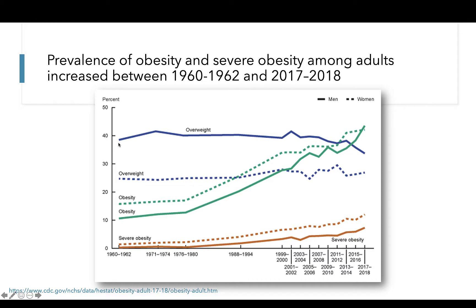Let's first look at trends for overweight. The prevalence of overweight is higher for men relative to women, but is actually fairly steady over time if we look at trends between the 1960s to the present day. In fact, we actually see decreases in the prevalence of overweight among men in recent years. However, we have to look at this in the context of our other weight status classifications of obesity and severe obesity, and when we do that, we see that these trends in overweight are perhaps not as promising as they first appeared.